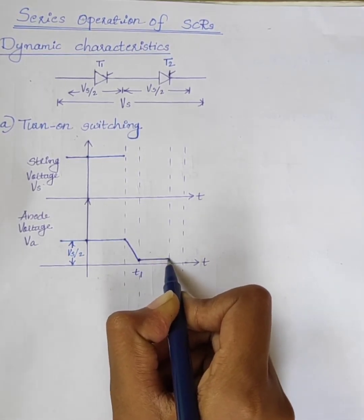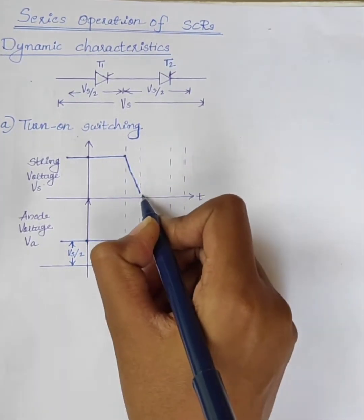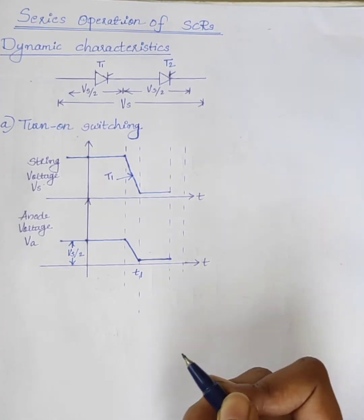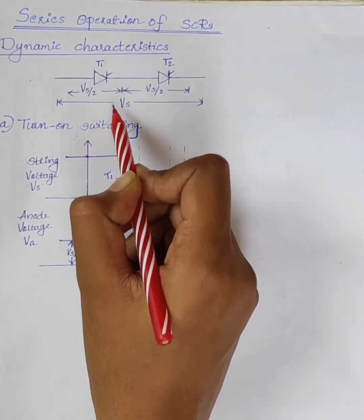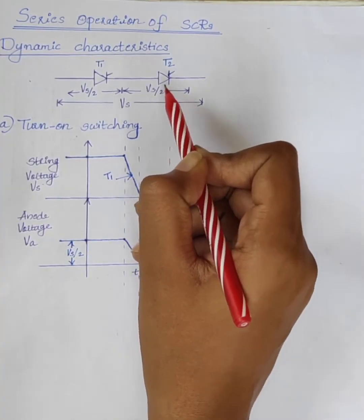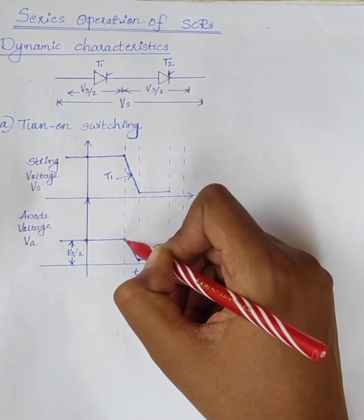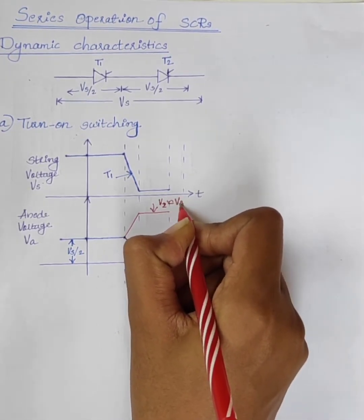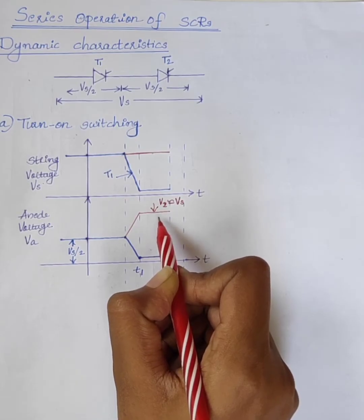T1 turns on at time T equals T1, and the voltage across T1 reduces to forward voltage drop. When the voltage across T1 drops from Vs/2 to almost 0, at the same instant the voltage across T2 will boost from Vs/2 to almost Vs. So the voltage across the second SCR V2 is approximately equal to Vs, as all the string voltage is now handled by thyristor T2.